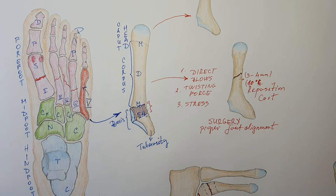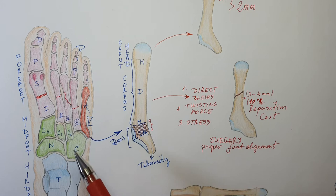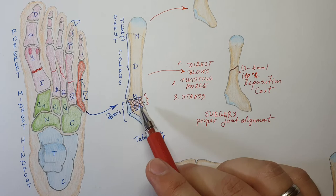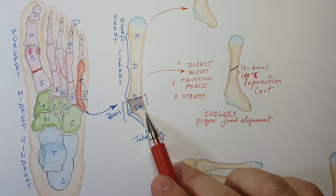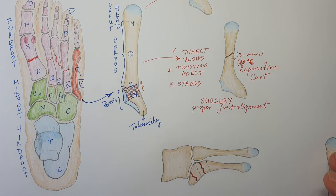Some of the most common fractures happen at the base of the fifth metatarsal bone. If you are working in an emergency setting, many patients with an injury to the fifth metatarsal will present most of the time in this region. These are actually the interesting fractures I want to talk about.